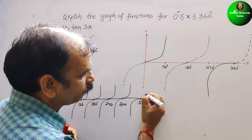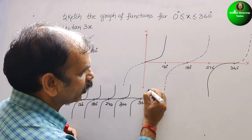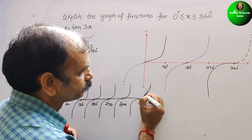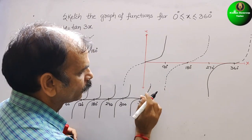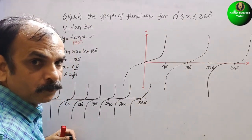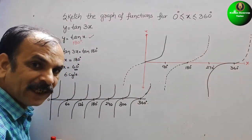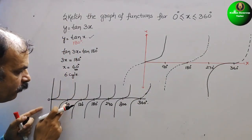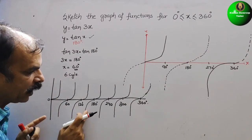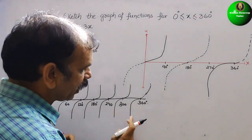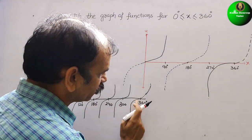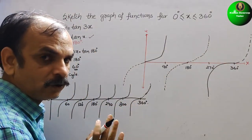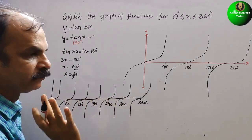From 360° if you were to continue, it would go on to 390°. Now if you check the number of cycles, counting each half-cycle: half, one and a half, two and a half, three and a half, four and a half, five and a half — and this last one makes six. So you get a total of 6 complete cycles for tan 3x from 0° to 360°.